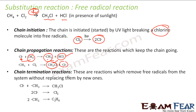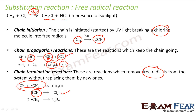The next is the chain termination reaction. These are the reactions which remove the free radicals without replacing them with new ones. So all the free radicals that are there will combine. For example, CH₃ dot and Cl dot can combine. Cl dots can also combine together to form Cl₂. And CH₃ dot can also combine to form C₂H₆.